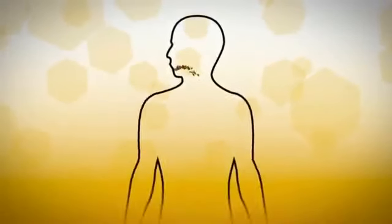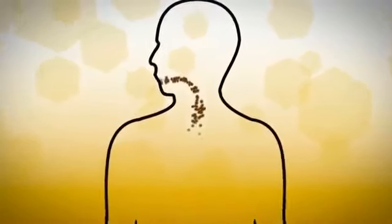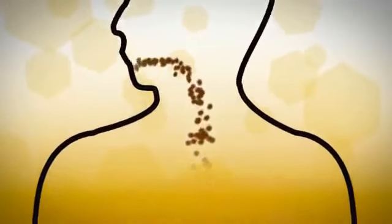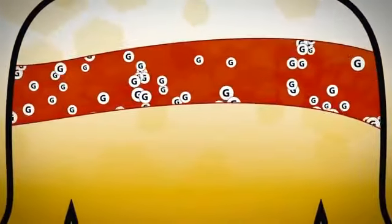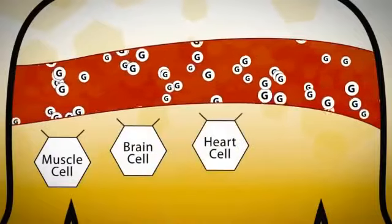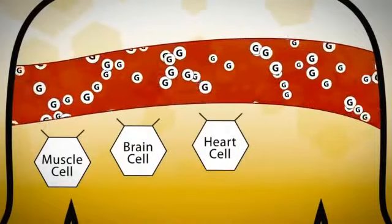As we eat, our body converts our food into glucose, a simple sugar that travels through our bloodstream. This glucose is the primary food for our cells. Whether it's a muscle cell, a brain cell, or a cell in our heart, they all feed on glucose.